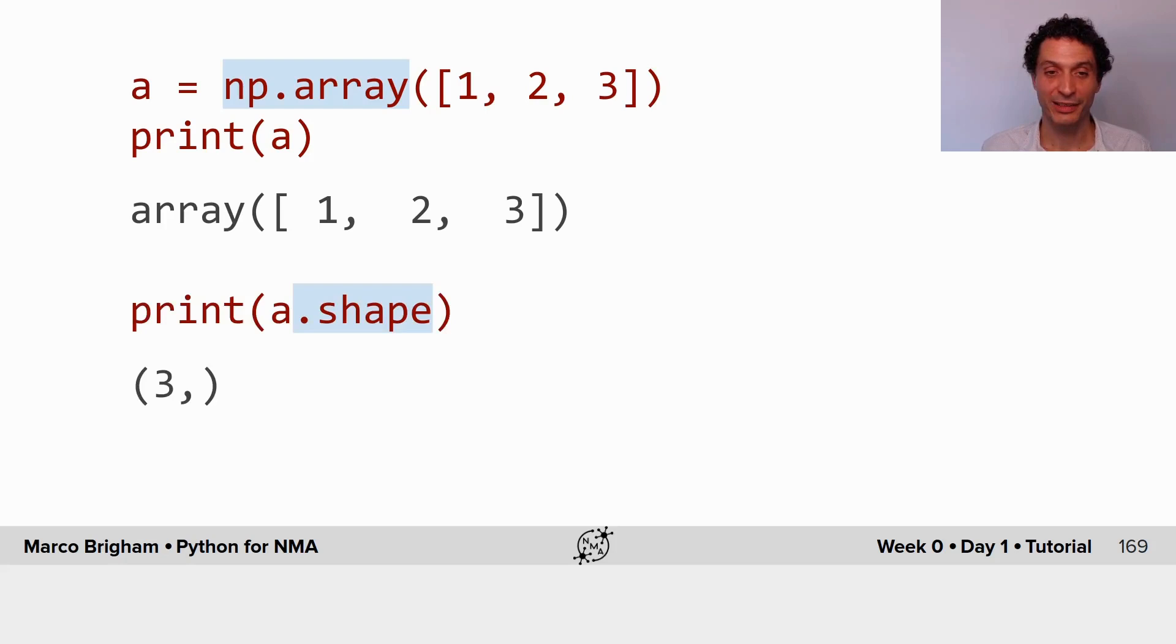NumPy arrays have several properties, so here we have a shape. This is a one-dimensional array, and so the shape is the number of elements, in this case 3.